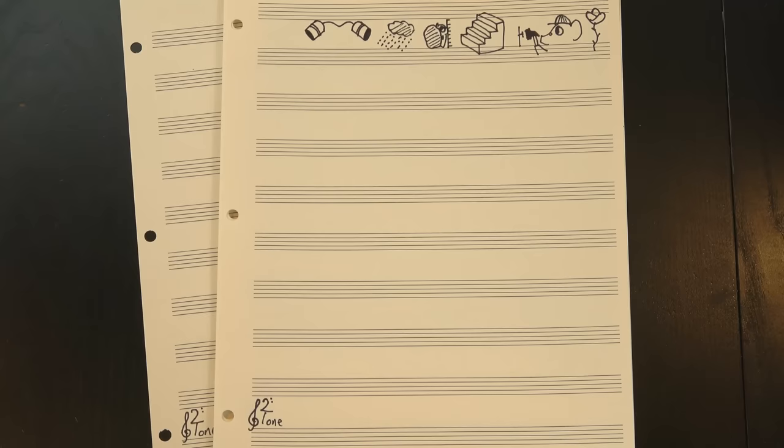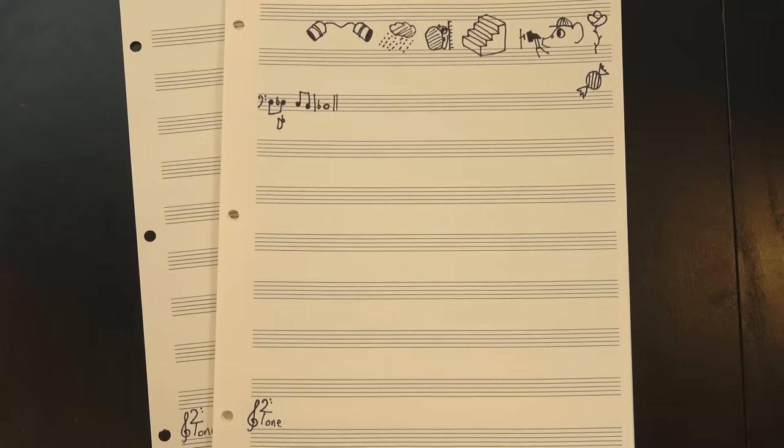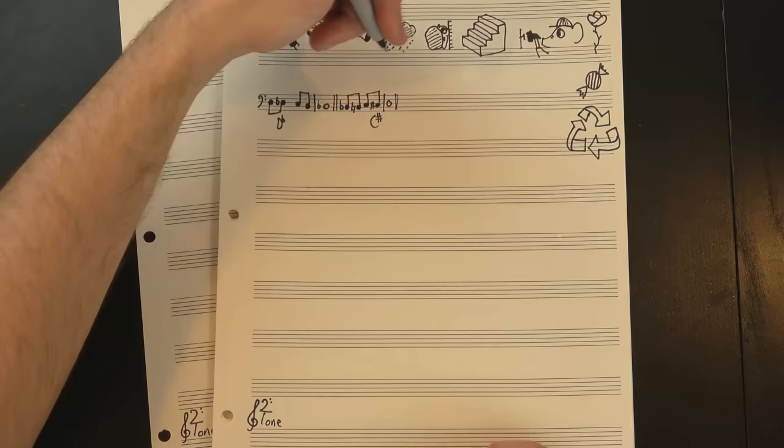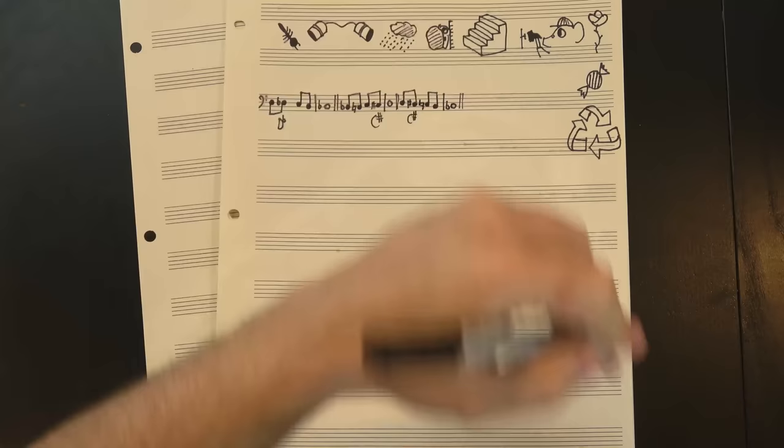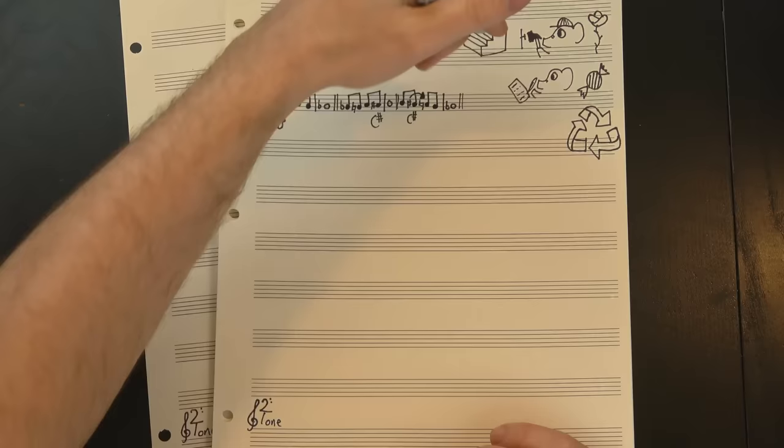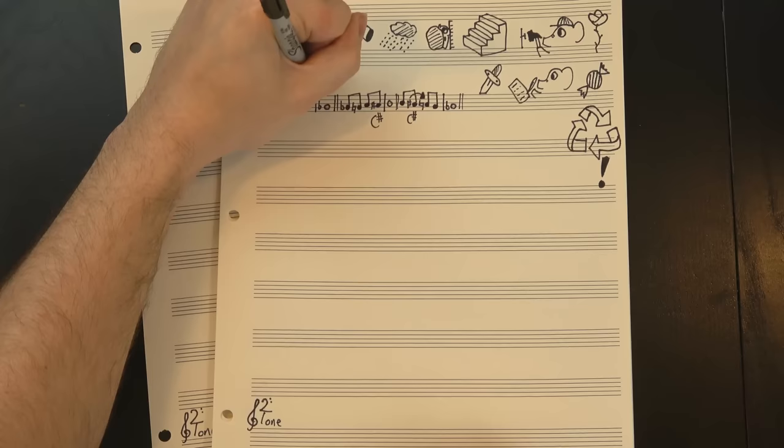When that happens, the convention is to just pick whichever note name is easier. You may have noticed that I called this note Db going down, but C-sharp going up. That's standard practice, because it reduces the number of accidentals I have to include. If I call this C-sharp, then I have to add a natural sign to this C to prevent the sharp from carrying over, and I don't want to write that if I don't have to. And for black key notes, where you need an accidental either way, that's all there is to it. But for white key notes like this one, there's another factor to consider: familiarity.